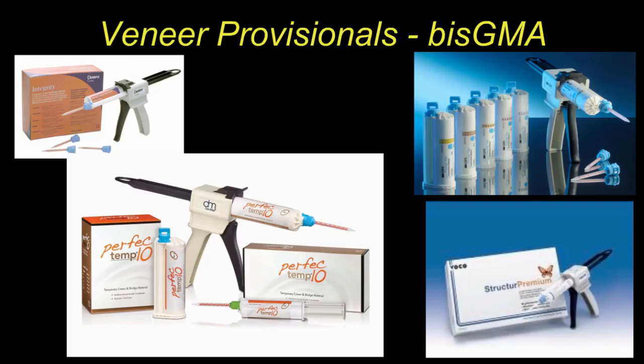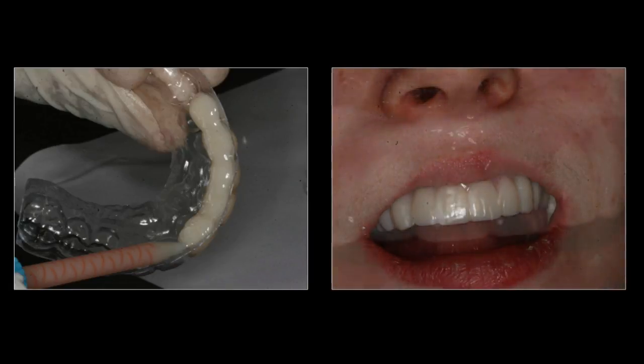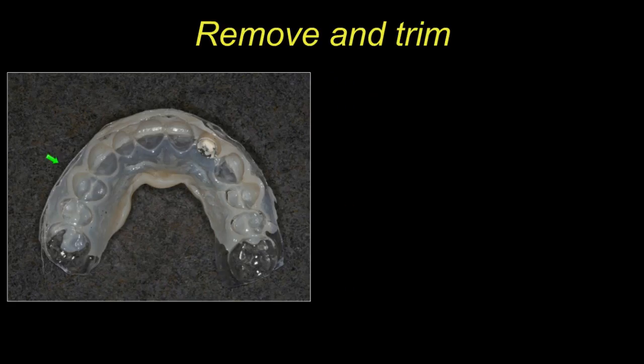For veneer provisionals, from a cost and time perspective, I prefer to make them chairside rather than having the lab do it — it's just a lot more expensive that way, and I can make short to medium-term provisionals that look really good at conversation distance. I'll place the material into the stent, seat it in the mouth, wipe off any excess on top, and leave it for the initial set time of a minute and 30 seconds. Then I tease it out, leaving it in place for the next two to three minutes to fully set.